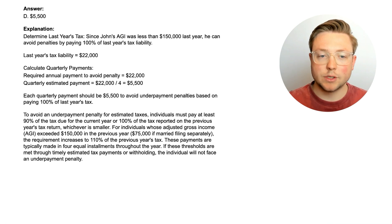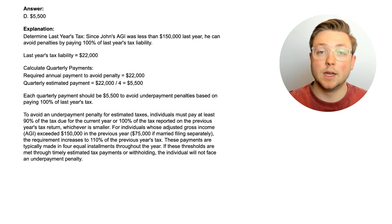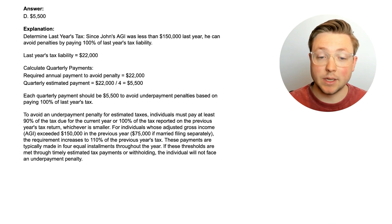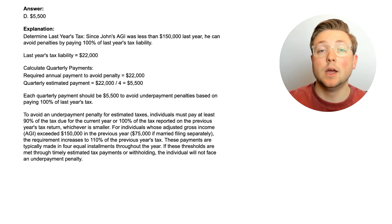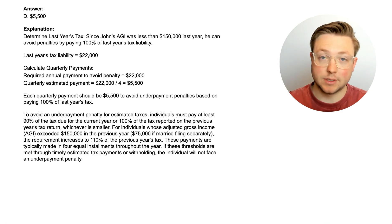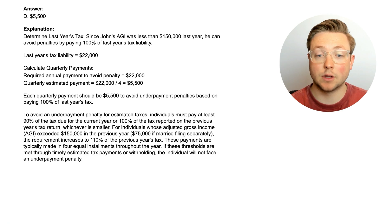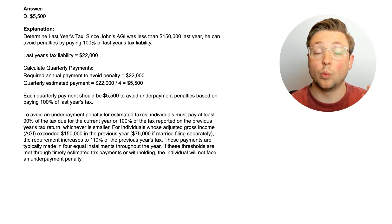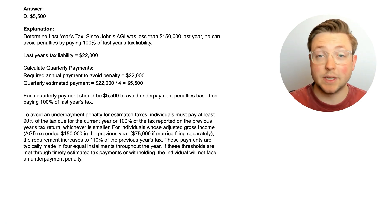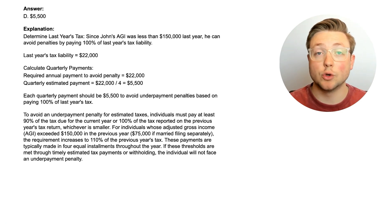Basically, to avoid a penalty for not paying enough taxes, you can make estimated tax payments. To know how much your estimated payments need to total, you either take 100% of the past year's tax liability or 90% of the current year's tax liability. And if you make over $150,000, it's 90% of the current year or 110% of the previous year's tax liability.